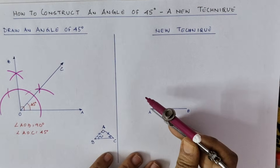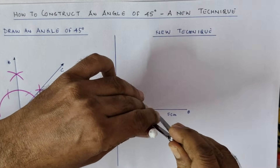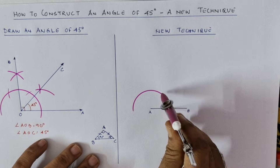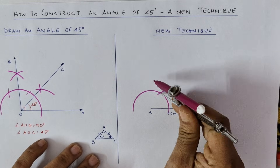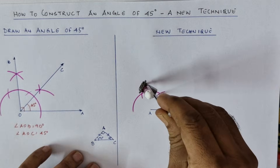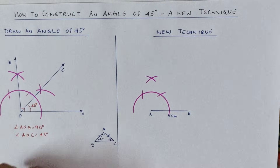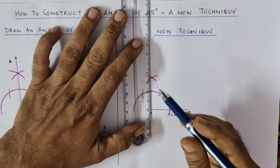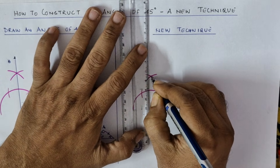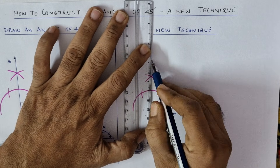In a similar way to before, draw a 90-degree angle pointing the needle to A. Just reduce the radius a bit. Draw the arc, draw the intersecting arcs, then join — point the intersection to O and join. This gives us 90 degrees at A.